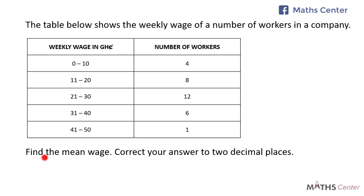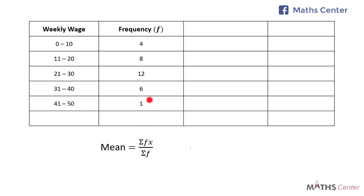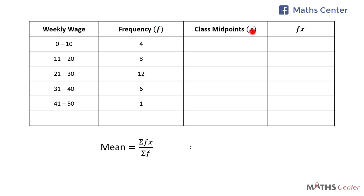The question says we should find the mean wage and correct our answer to two decimal places. To do this we will draw a table with four columns. The first will be for the weekly wage, the second for the frequencies — the f values. To get the mean, the formula is sigma fx divided by sigma f. We have the f values, so we will need the x values — the class midpoints. With the x values we can find the fx values, which are the product of the f values and the x values.